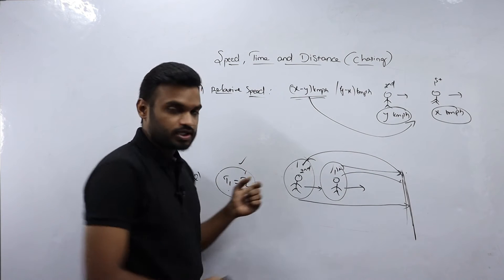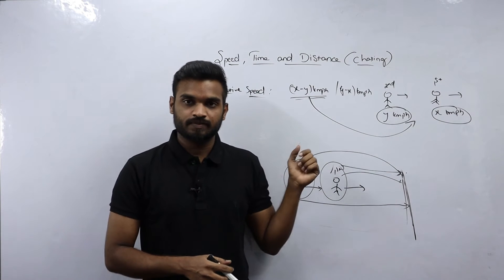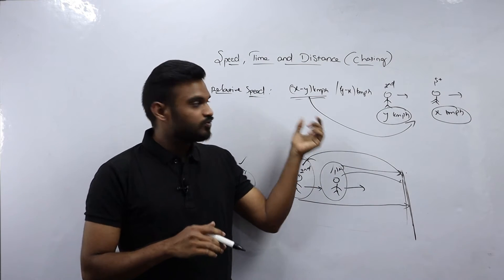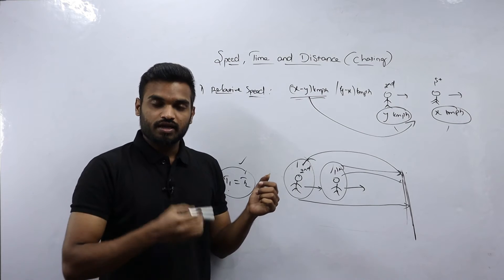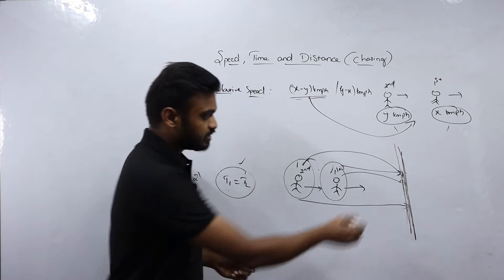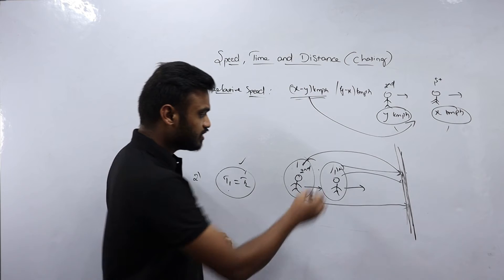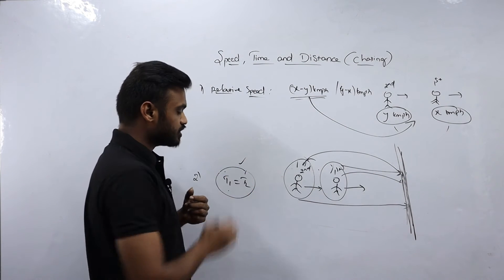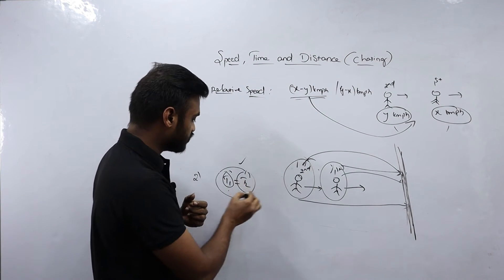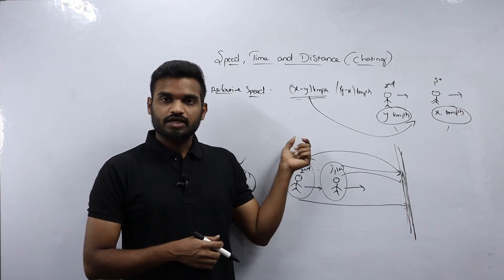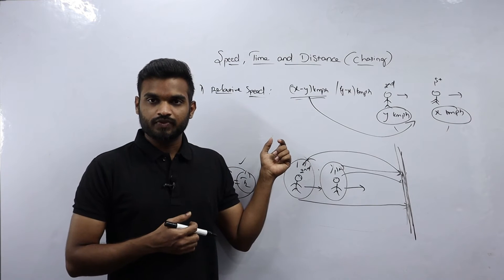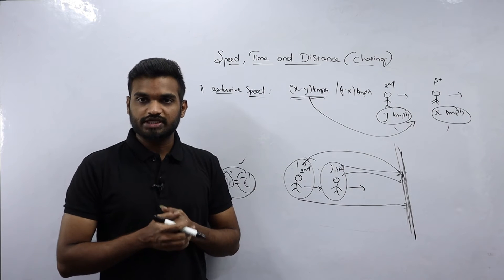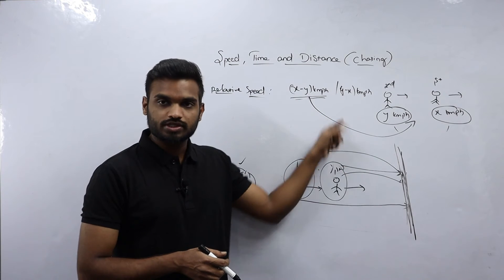So these are the two most important things to remember for chasing: first, when both persons travel in the same direction, the relative speed is the difference of their speeds; second, at the catching or overtaking point, the time taken for both persons to reach that point is the same — T1 equals T2. If you understand these two concepts, you can solve any kind of chasing problem. We will solve problems using two methods: relative speed method and equating time or normal method.